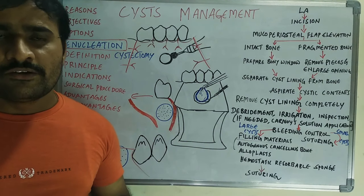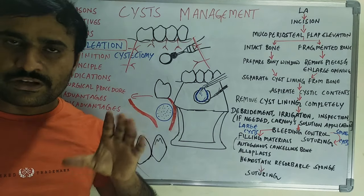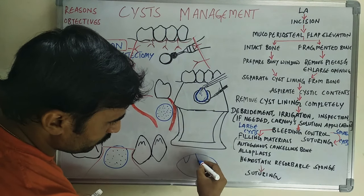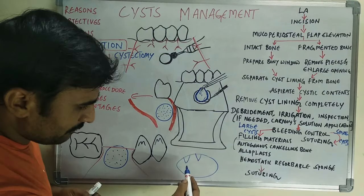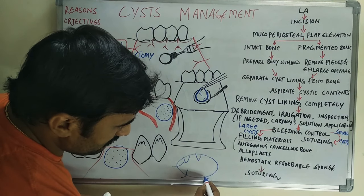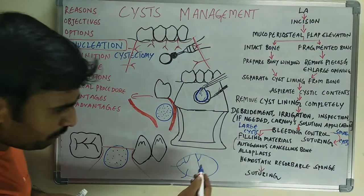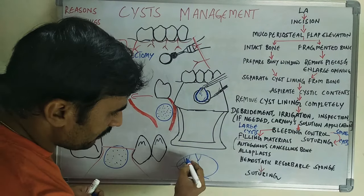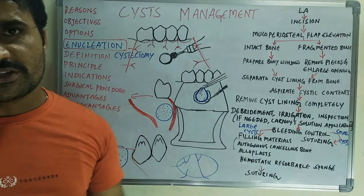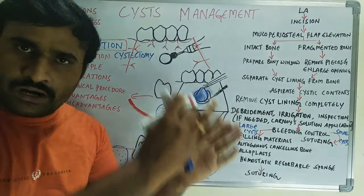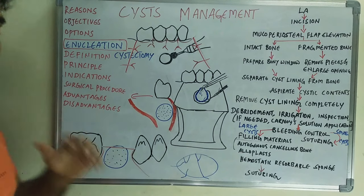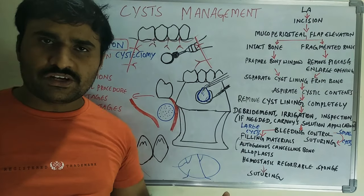The third disadvantage is the risk of pulpal necrosis. In cases of large cysts, root apices may be surrounded by the cyst, and blood supply to the teeth crosses through the cystic lining. When the cyst lining is completely removed, the blood supply may be disrupted, leading to pulpal necrosis. The affected teeth may become discolored, requiring endodontic therapy or extraction. This is the final disadvantage of enucleation.